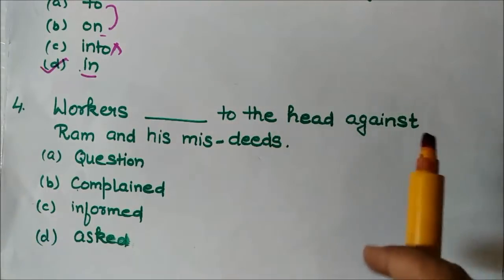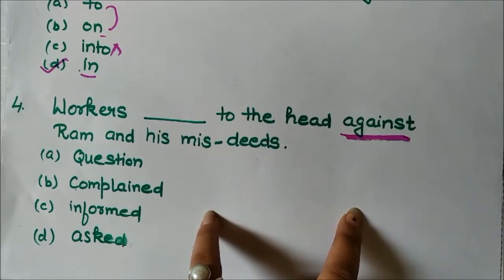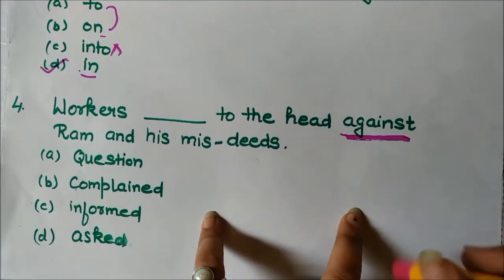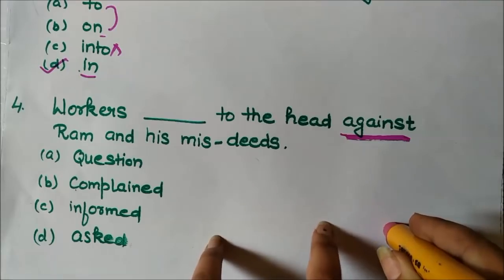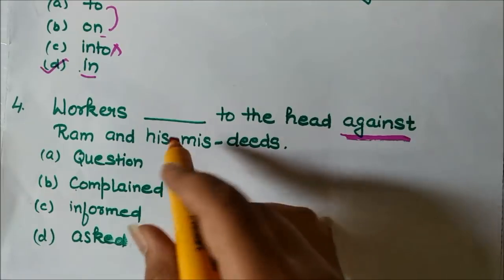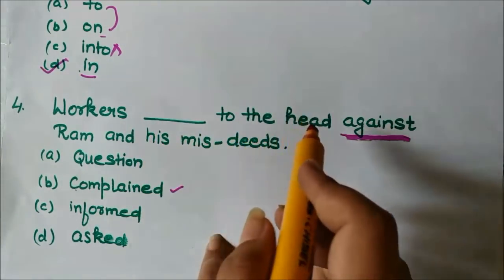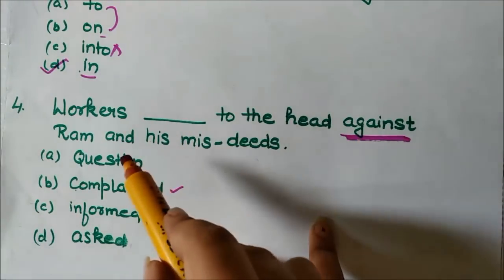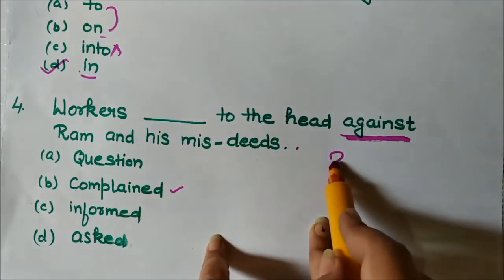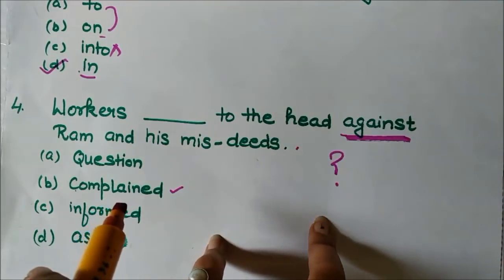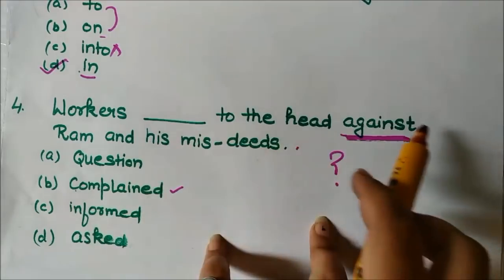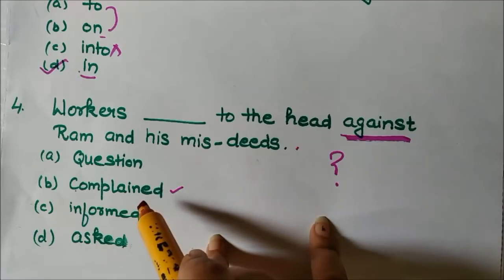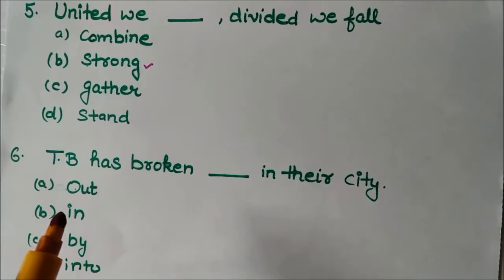Next question: 'Workers ___ to the head against Ram and his misdeeds.' The sentence is clearly negative — going against someone. Options: complained, informed, asked. When we report something against someone, we complain. Also, 'questioned' is ruled out because there is no question mark — it ends with a full stop. Answer: 'Workers complained to the head against Ram and his misdeeds.'